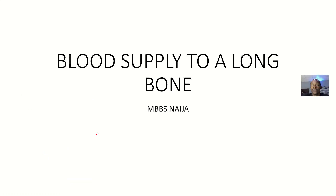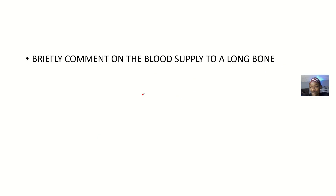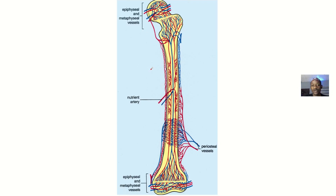Let's quickly talk about the blood supply to a long bone. The two most popular long bones are the femur and humerus, so it's left for you to go and check out any other long bones in the body. The question in the exam was: students were asked to briefly comment on the blood supply to a long bone. So I brought a typical long bone here with the blood vessels being listed out.